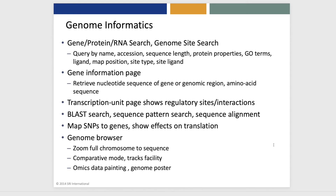BioPsych provides a variety of genome informatics tools, including gene, protein, and RNA search tools, and genome site search tools, so the user can search for genes according to a large number of fields. There's a gene information page that lets the user retrieve the nucleotide sequence of a gene or genomic region, or the amino acid sequence of the gene product.